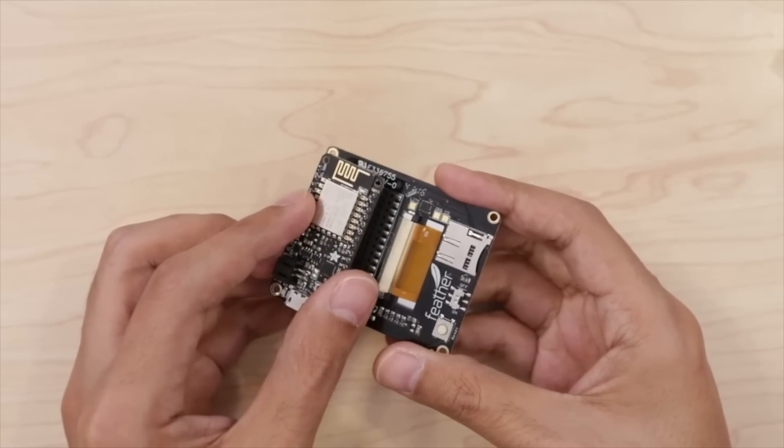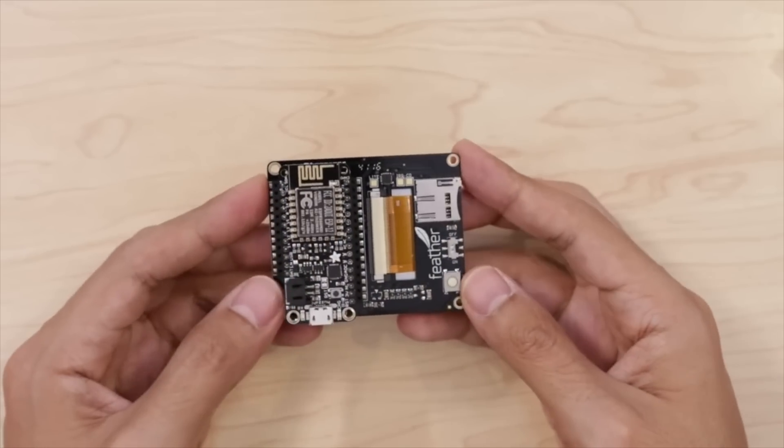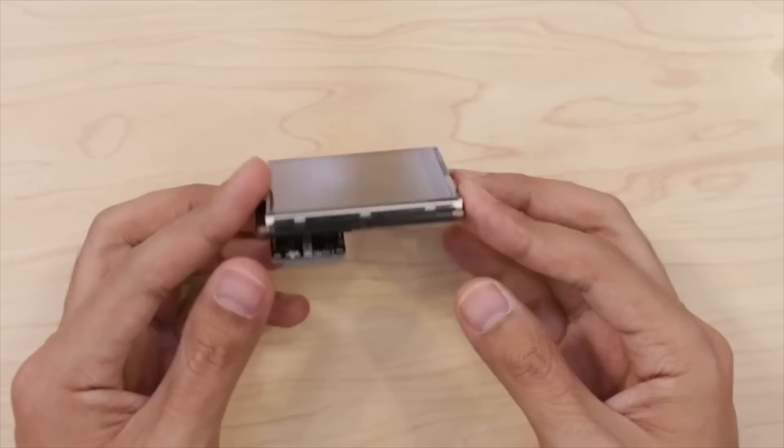The 2.4 inch TFT feather wing combined with the Adafruit Feather Huzzah ESP8266 make assembling this project incredibly easy. The two just snap together and there's no need to wire any connections.